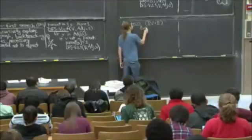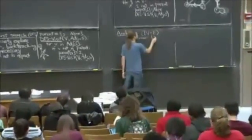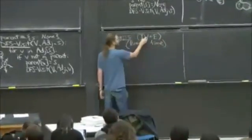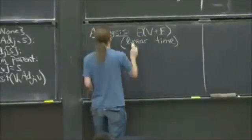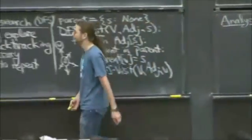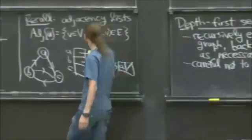This is what we call linear time because this is the size of the input. It's theta V plus E for the whole thing. The size of the input was V plus E.